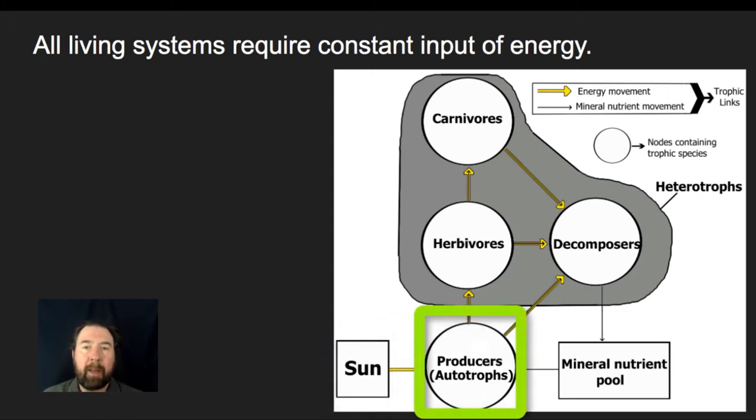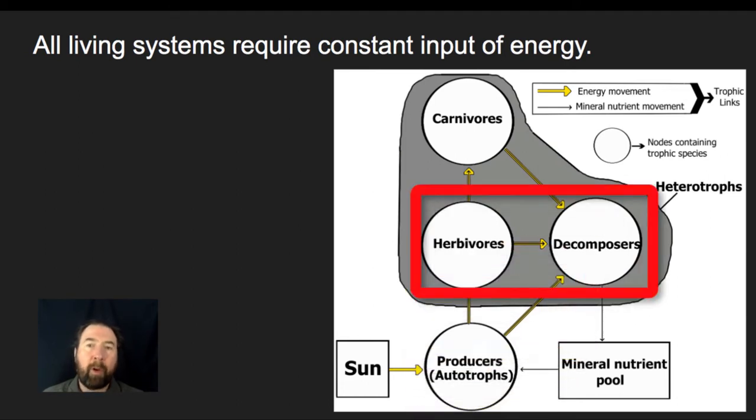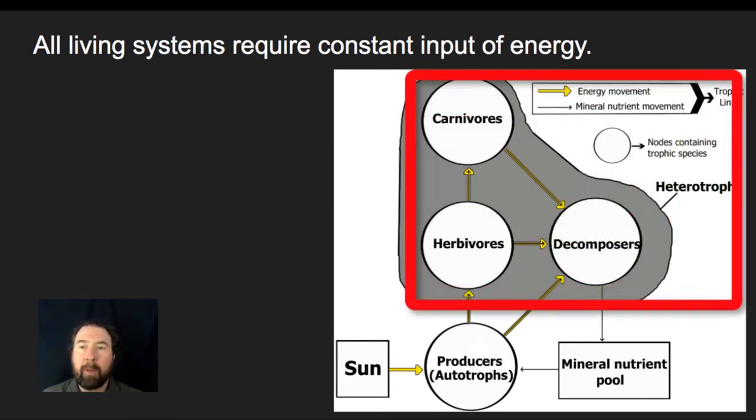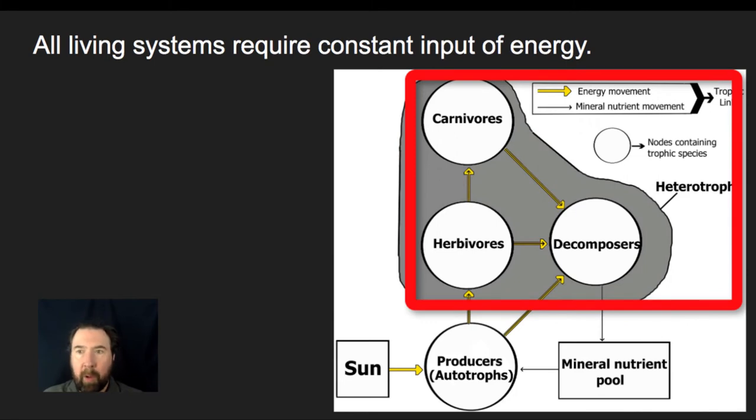That sun energy is then going to go to producers. Those producers are then going to be consumed by herbivores, by decomposers, and those herbivores are also going to be consumed by carnivores. We group the herbivores, carnivores, and decomposers into a bucket called heterotrophs, and the reason we group them all together like that is because none of those organisms can make their own energy and they are reliant upon producers to take the light energy from the sun and turn it into a form that can then actually enter into the ecosystem where the heterotrophs can have access to it.